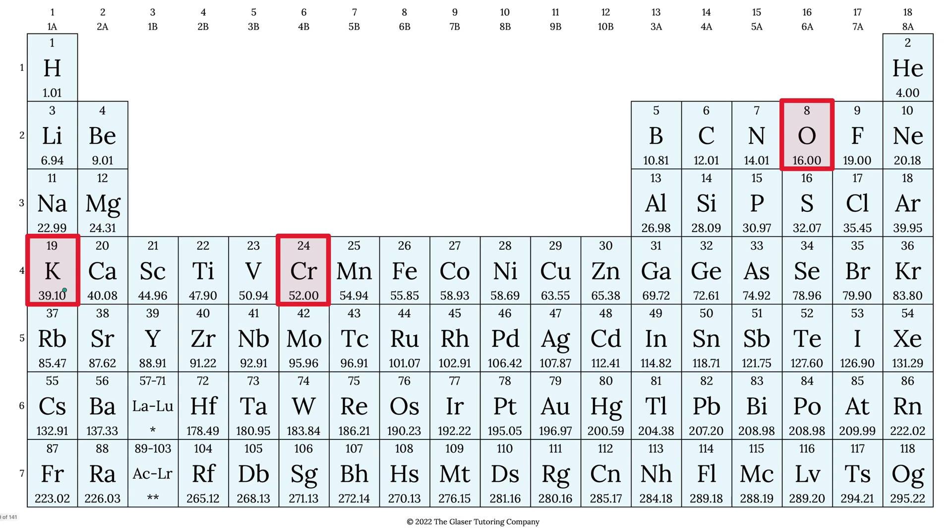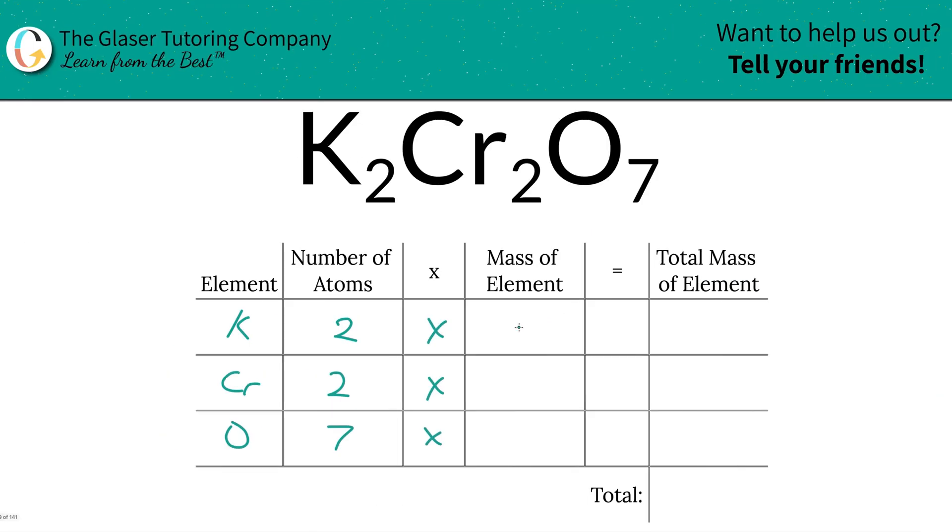The mass is found on the table, so here you go. Potassium is 39.1, chromium is 52, and oxygen is 16. So those are the masses we are going to write down. Potassium was 39.10, chromium is 52, and then oxygen was going to be 16.